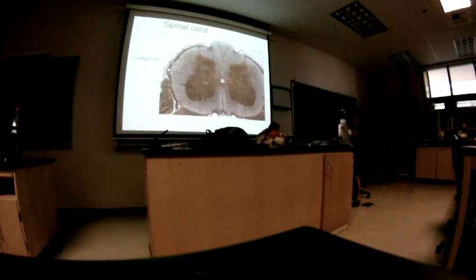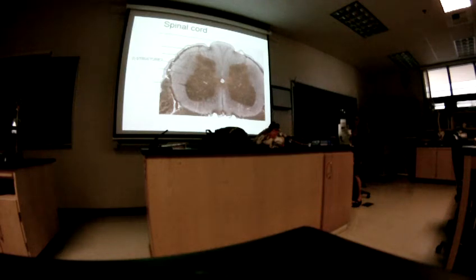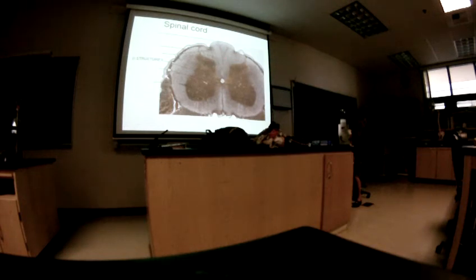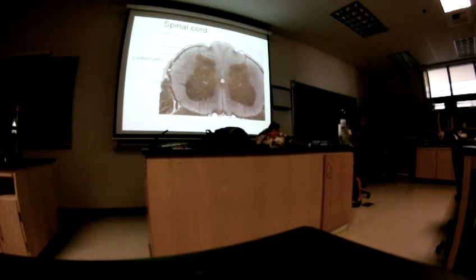What's this one — the region or structure? Anterior white column. And what about this gray matter right here? Anterior gray commissure. How about this gray matter right here? Posterior gray commissure. And what's the fold that's typically back here? Posterior median sulcus. Good.